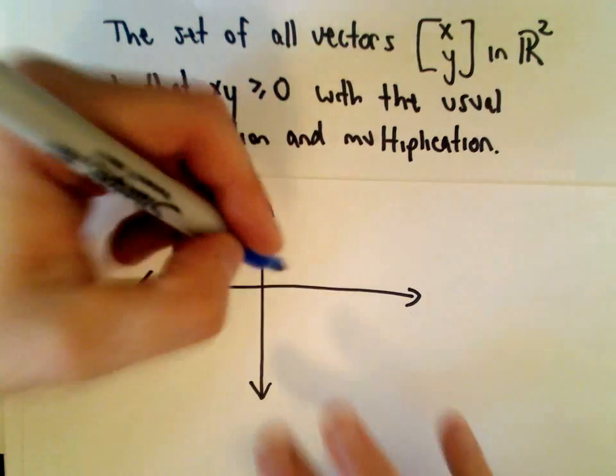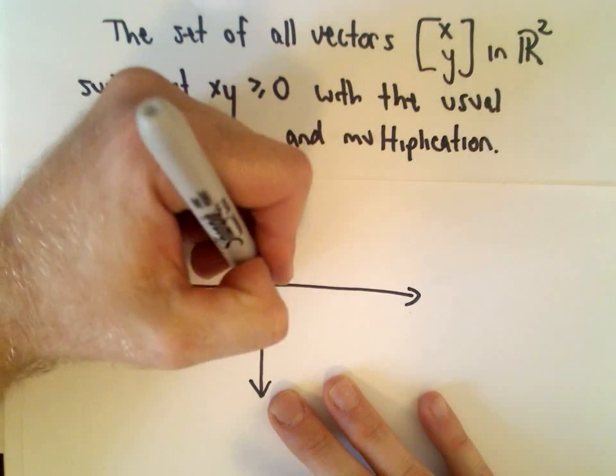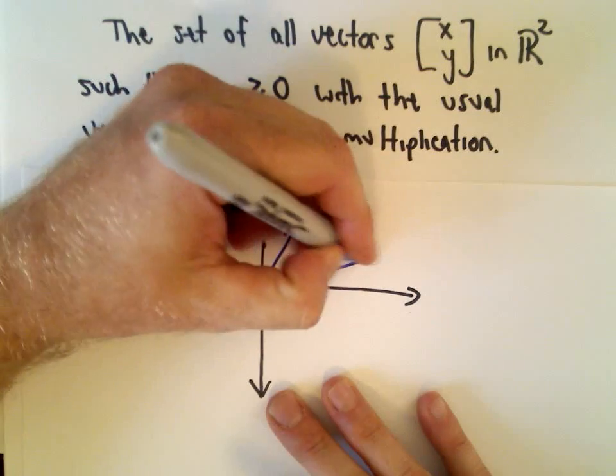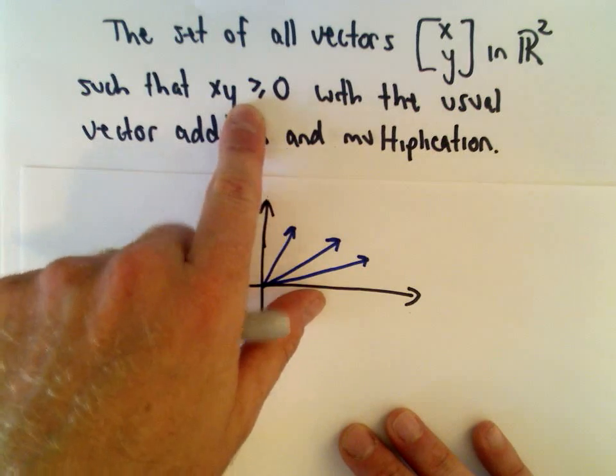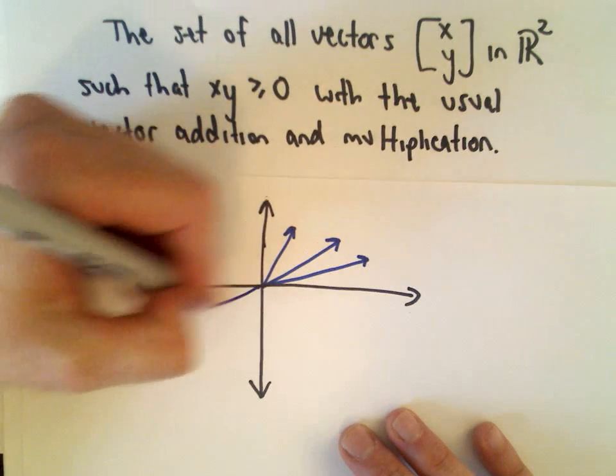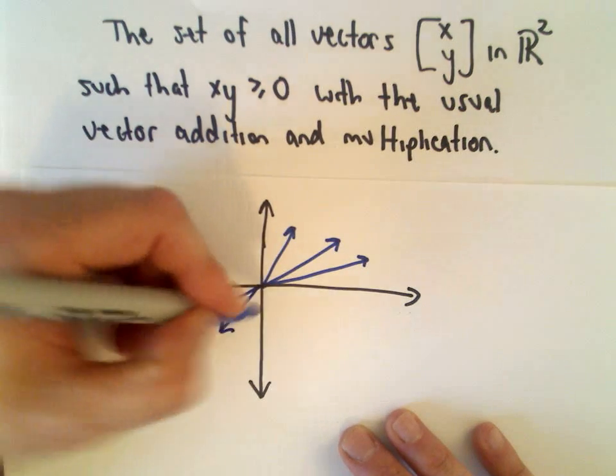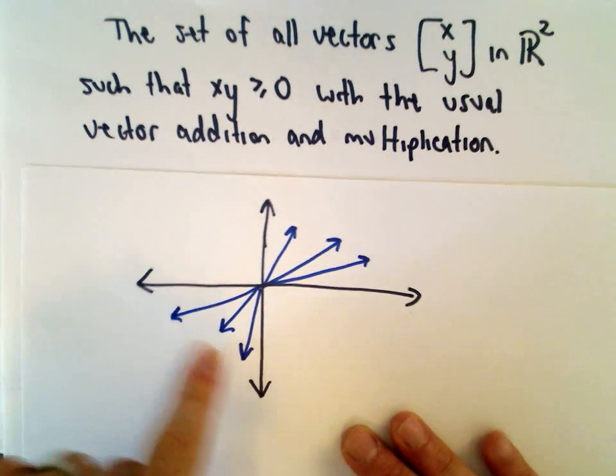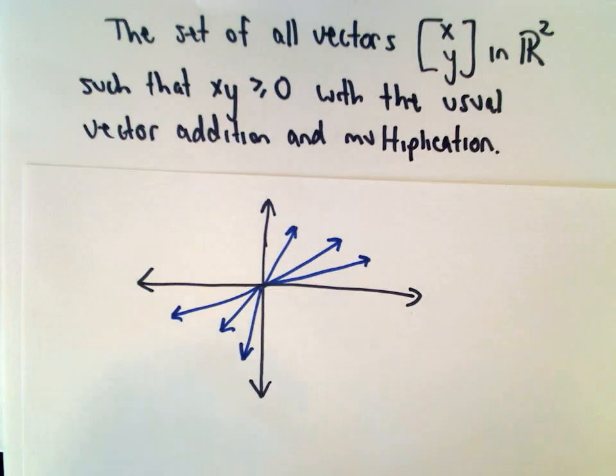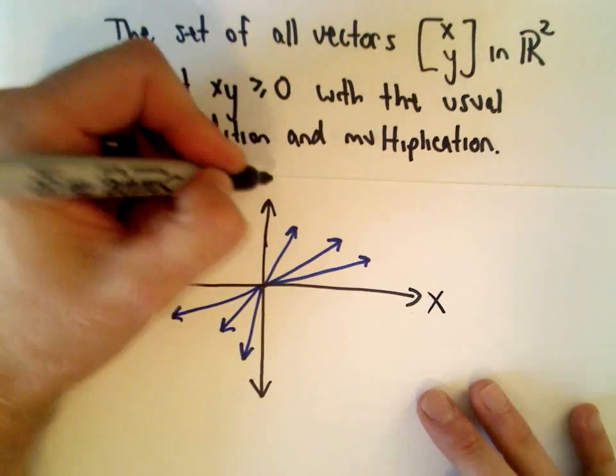notice that your vectors are going to be relegated to be either in the first quadrant, right, because there both the components will be positive so that when we multiply we get something greater than or equal to 0, or they've got to be in the third quadrant because, you know, down here, both the components will be negative. And if you multiply x times y, again, you'll get something greater than or equal to 0.